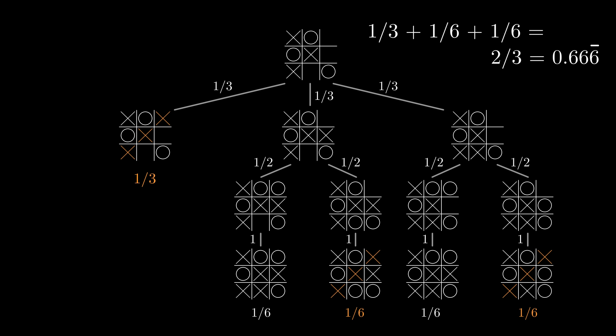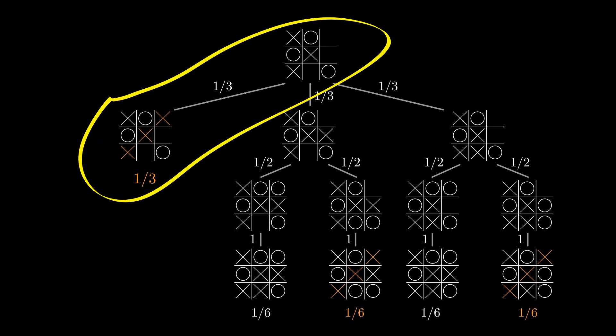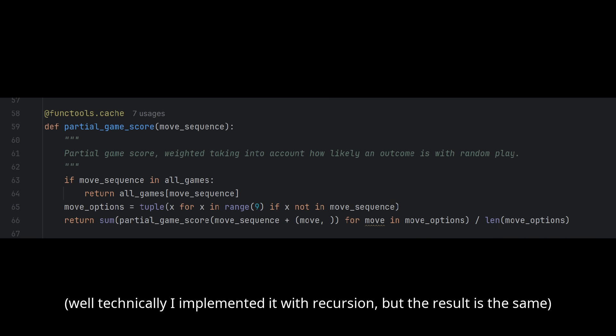The basic issue is that, because some games end early, uniformly random play does not correspond to uniformly random outcomes. So in my code, I had to adjust the weighting somewhat to get the final board position values you've seen in this video. Glad we got that sorted out.